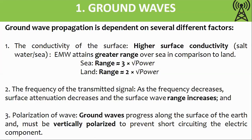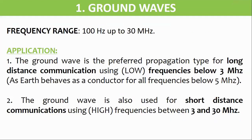A horizontally polarized wave will be attenuated very quickly and give very short ranges; therefore, vertical polarization is generally used at lower frequencies. The range of ground waves is from 100 hertz to 30 megahertz.